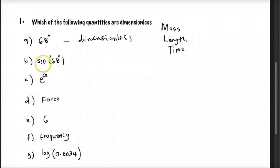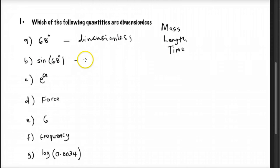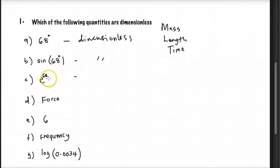Sine 68 degrees also doesn't have mass, length, or time, so it's also dimensionless. And e to the power of 68 — e doesn't carry any dimensional value, so that's also dimensionless.